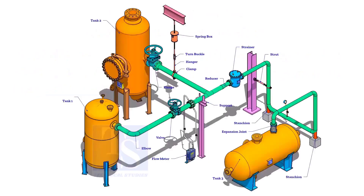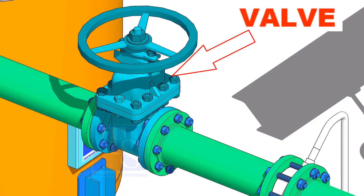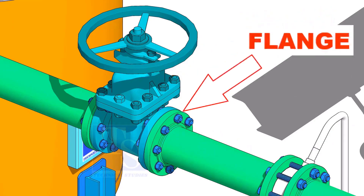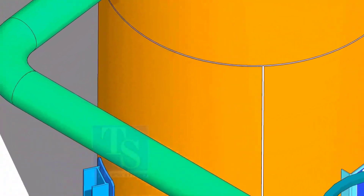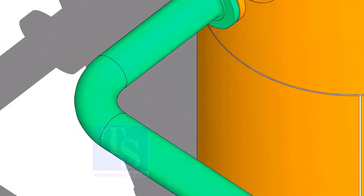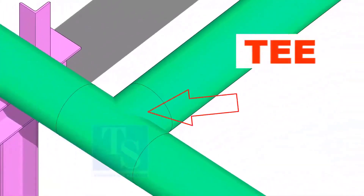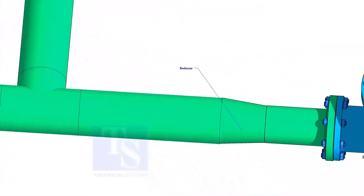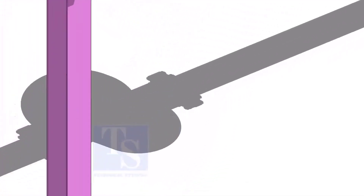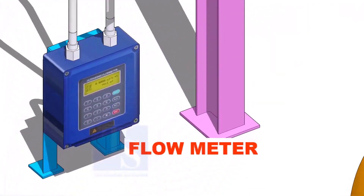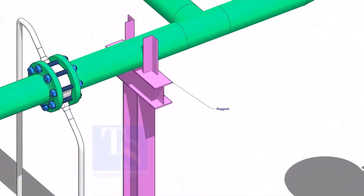Let us have a look at some important piping components. Valve. Flange. Elbow. Tee. Reducer. Flow meter.